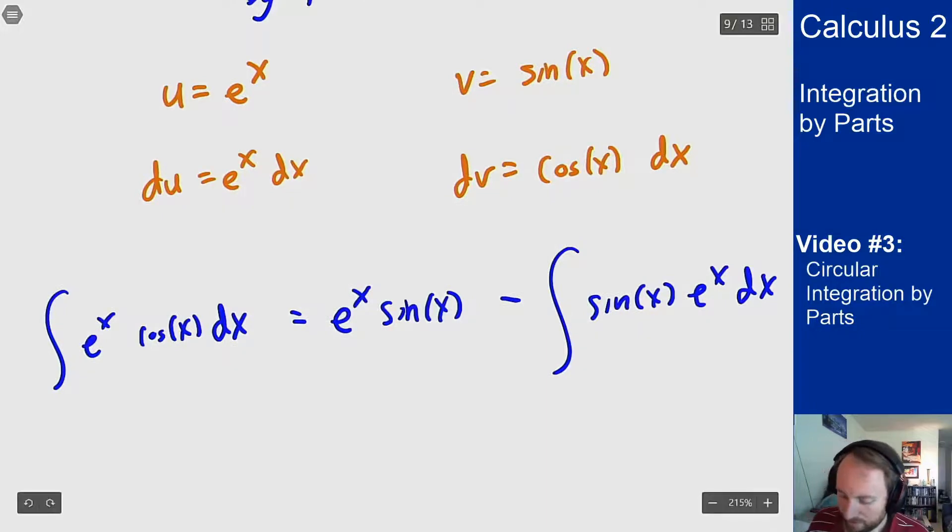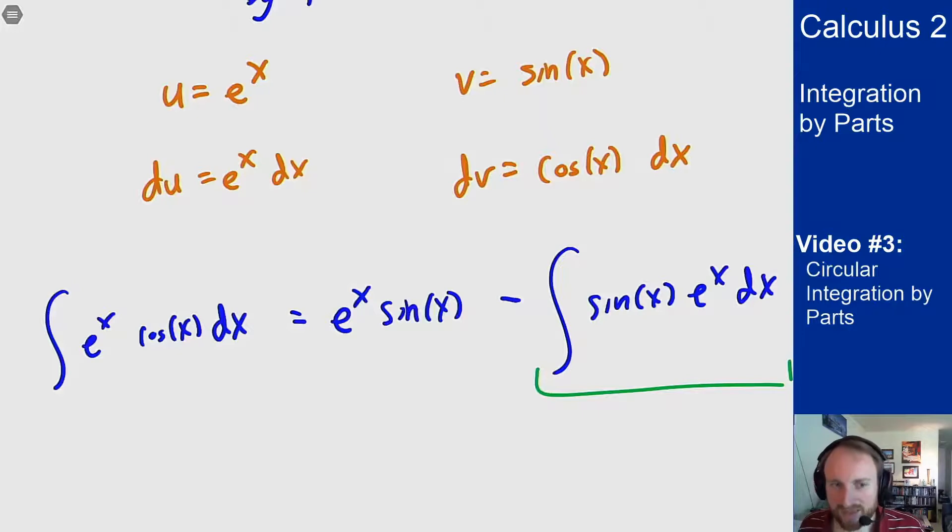Now this new integral we have here didn't get easier but it also didn't really get any harder either. It's sort of the same as what we had before. I've just swapped a sine for a cosine. And if you think about how derivatives and integrals work, if I do this one more step I'm probably going to switch the sine back to a cosine and that might give me something I can handle here. Now the important thing for these problems: you have to make sure you make the same choice for u and v that you did before.